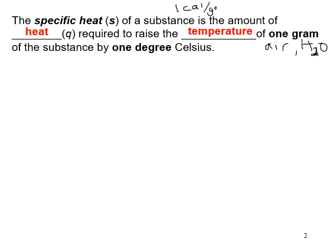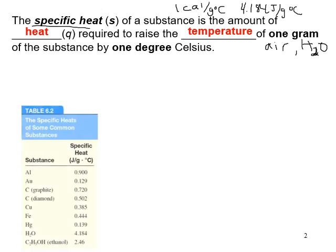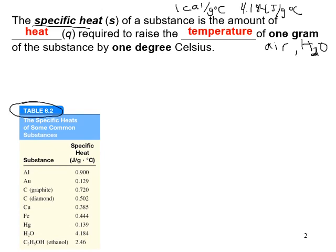We don't really use calories in our textbook — we use joules. Calories and joules are interrelated: 4.184 joules per gram degree Celsius is equivalent to 1 calorie per gram degree Celsius, because one calorie equals 4.184 joules. The specific heat can be for any substance — gold, copper, iron, air, water, methanol, ethanol. Your textbook has Table 6.2 showing specific heats of common substances.